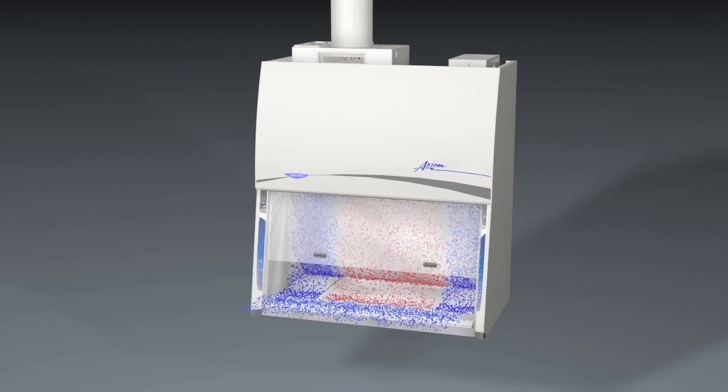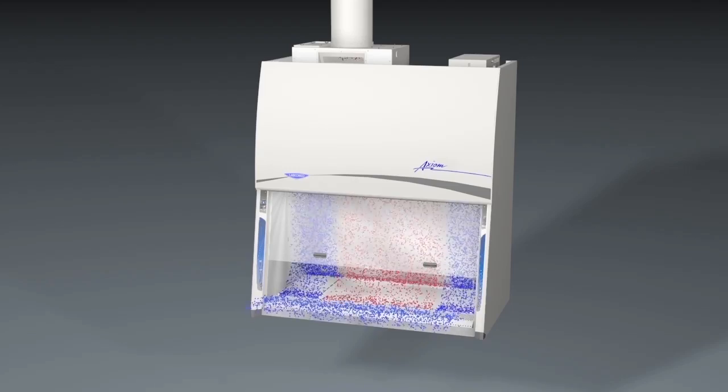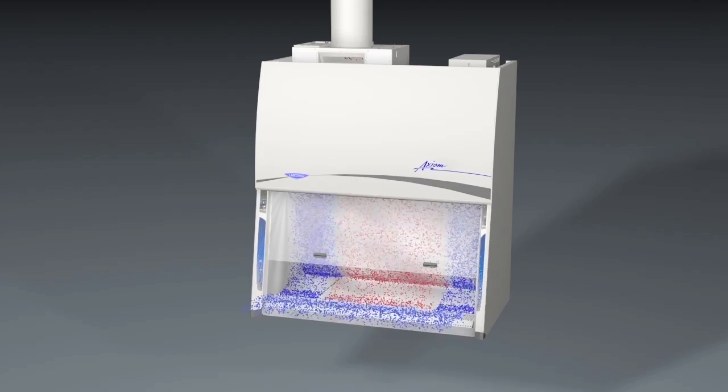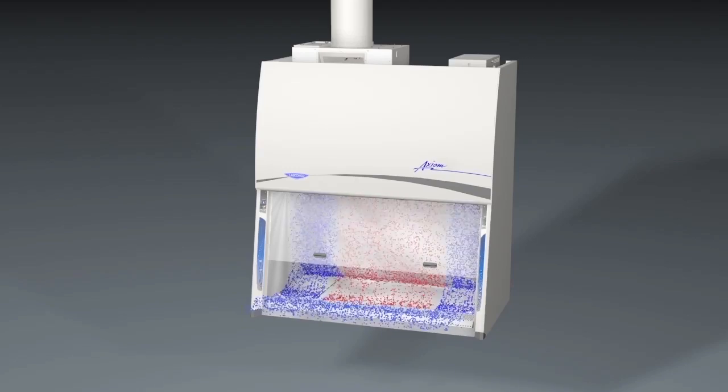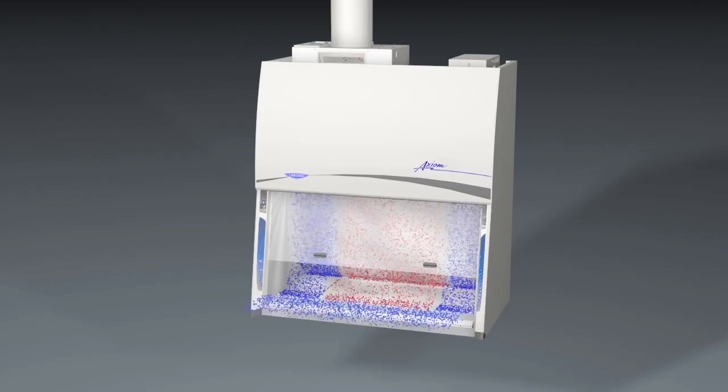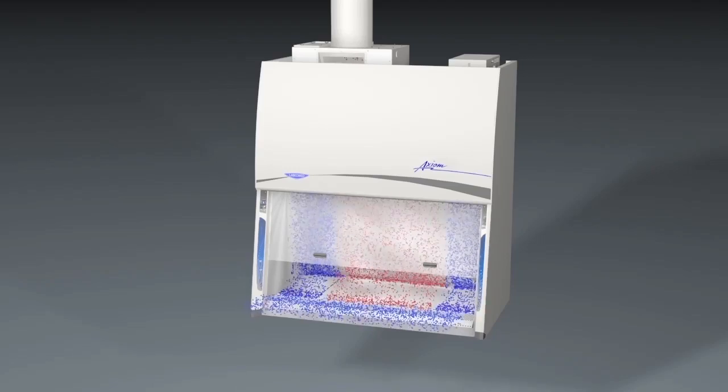The Axiom is the safest Class II biosafety cabinet available. NSF tested and listed the Axiom in accordance with NSF ANSI Standard 49 for biological protection in both A and B modes.